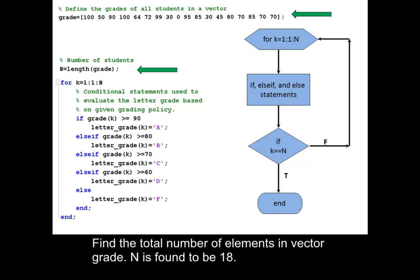Find the total number of elements in vector grade. N is found to be 18.